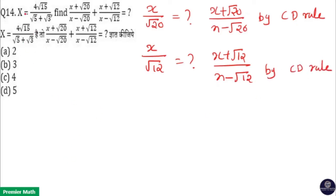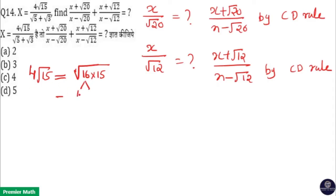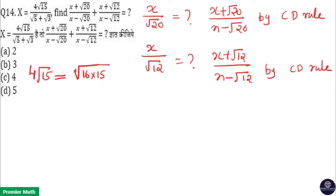Here x is equal to 4√15 divided by √5 plus √3. Now 4√15 can be written as √16 × √15, because 4 brought inside becomes 16. So 4×4 = 16 and 3×5 = 15, meaning 4×3 = 12 and 4×5 = 20. Therefore √16 × √15 = √12 × √20.